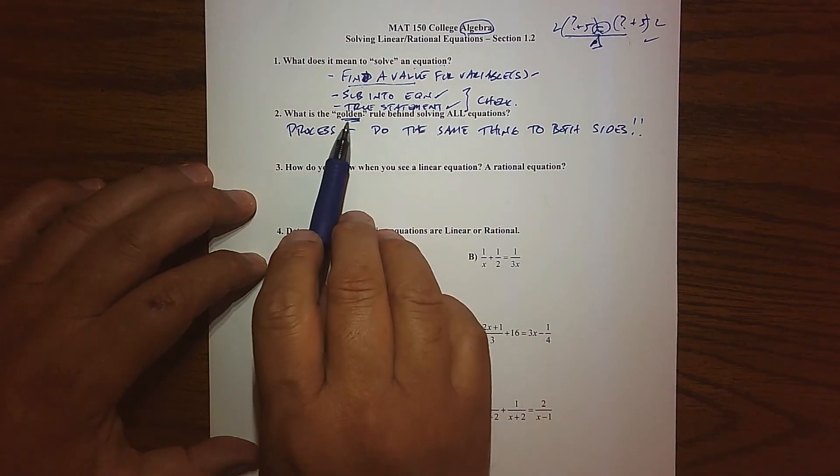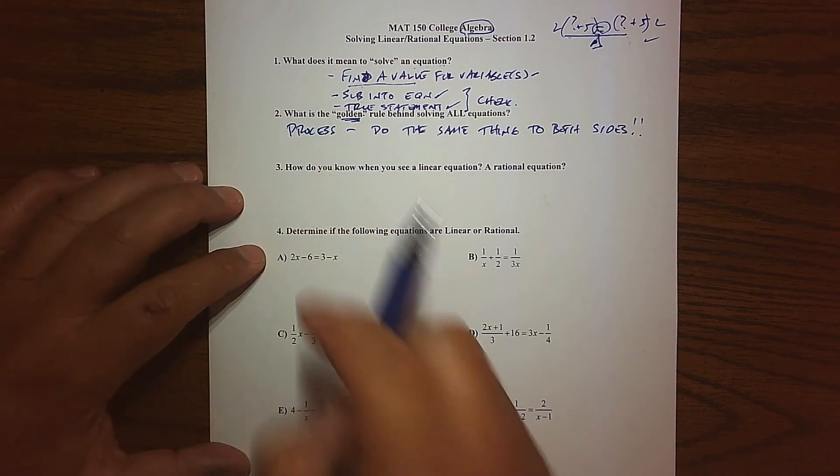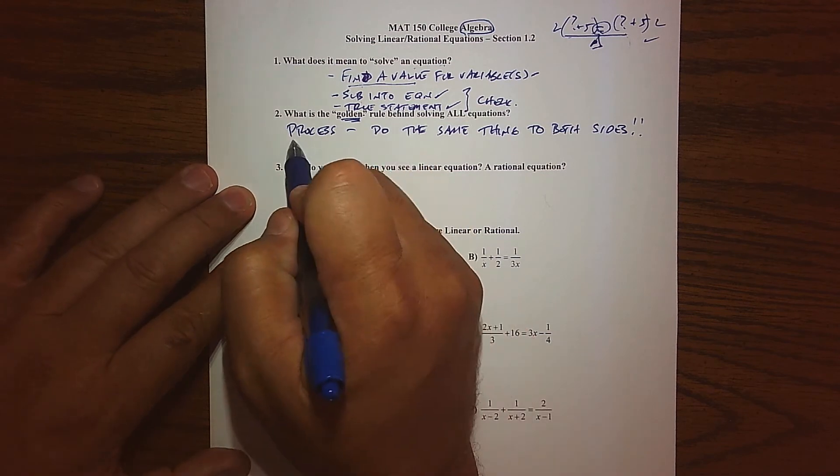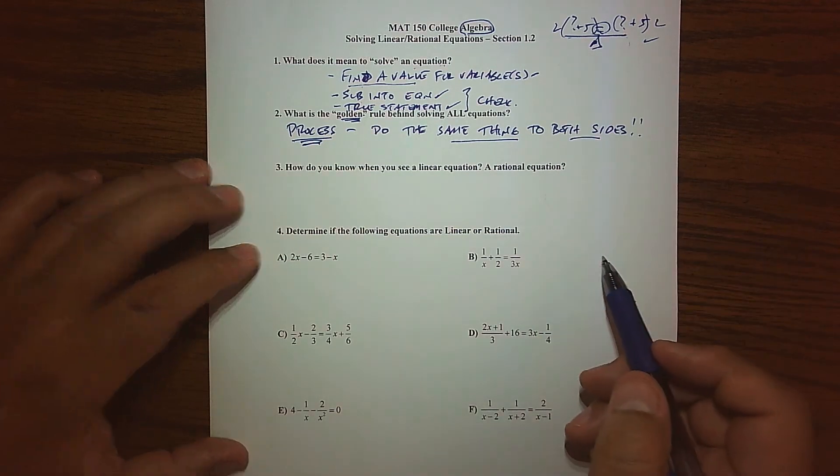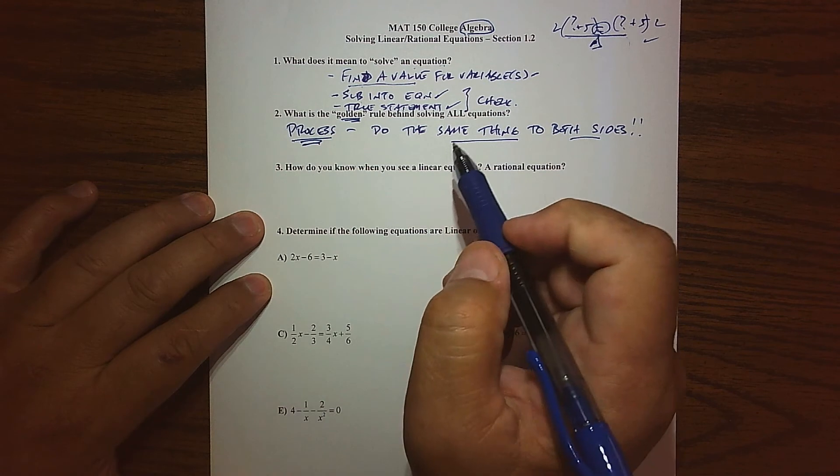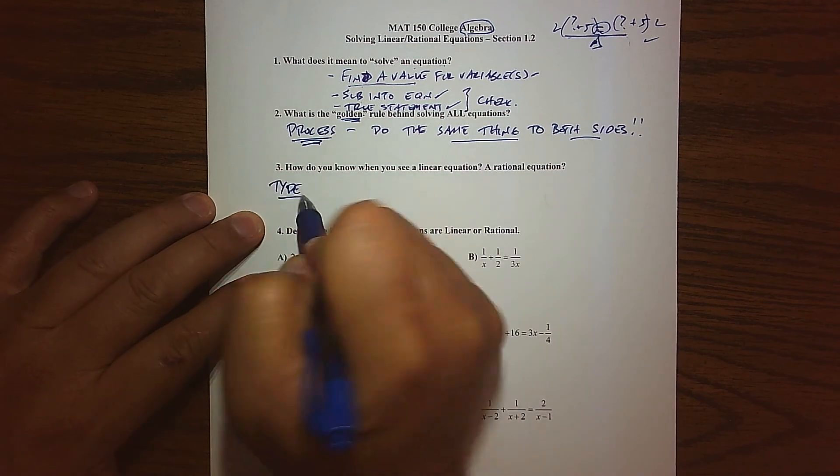So I call it the golden rule, and it applies to anything. Square roots, absolute values, applying a function value, it doesn't matter. Whatever you do to one side of the equation, you do the exact same thing to the other. And then, it turns out that what process we use, like what kind of decisions we make, what are we going to do to both sides, other processes that kind of come in, is kind of determined by the type of equation we have.